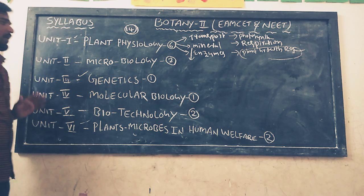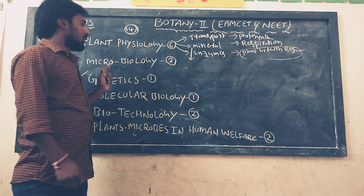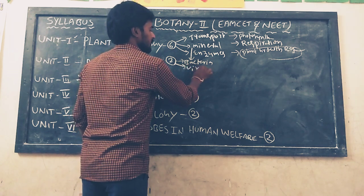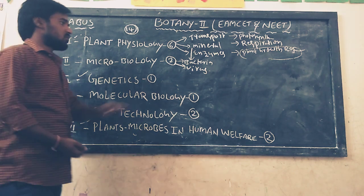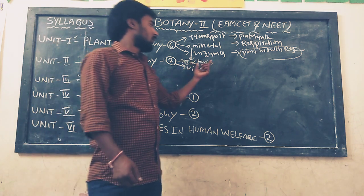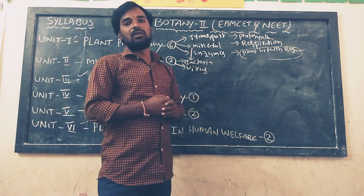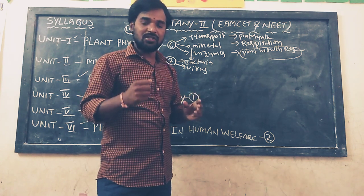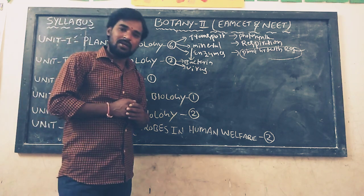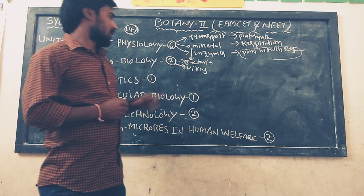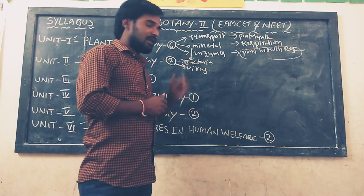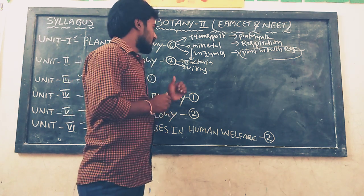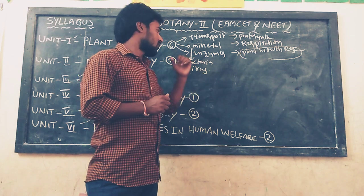The second unit is microbiology, which contains two chapters: bacteria and viruses. In the bacteria chapter, we will discuss types of bacteria, types of nutrition in bacteria, types of reproduction in bacteria, and useful as well as harmful bacteria. In the viruses chapter, we will discuss types of viruses, replication of viruses, and related topics.